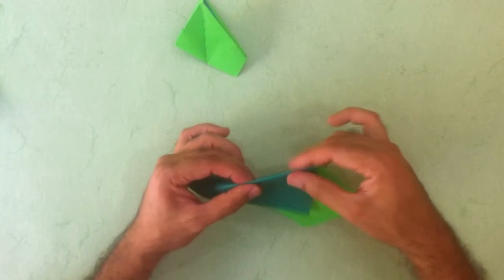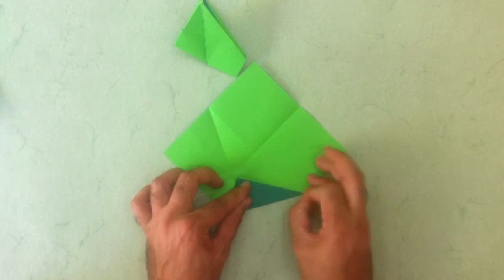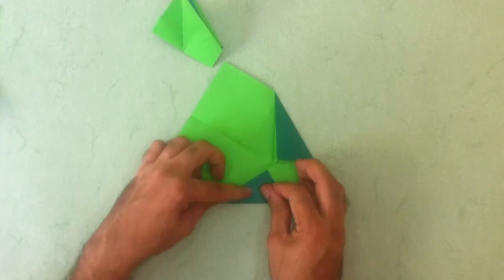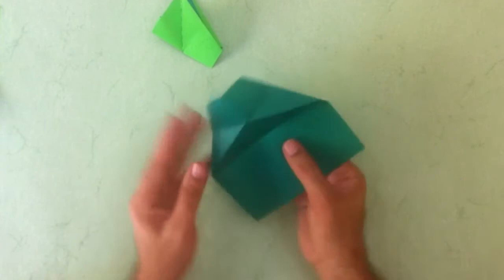And again on the other side. Align the edges to the new crease lines. And now collapse.